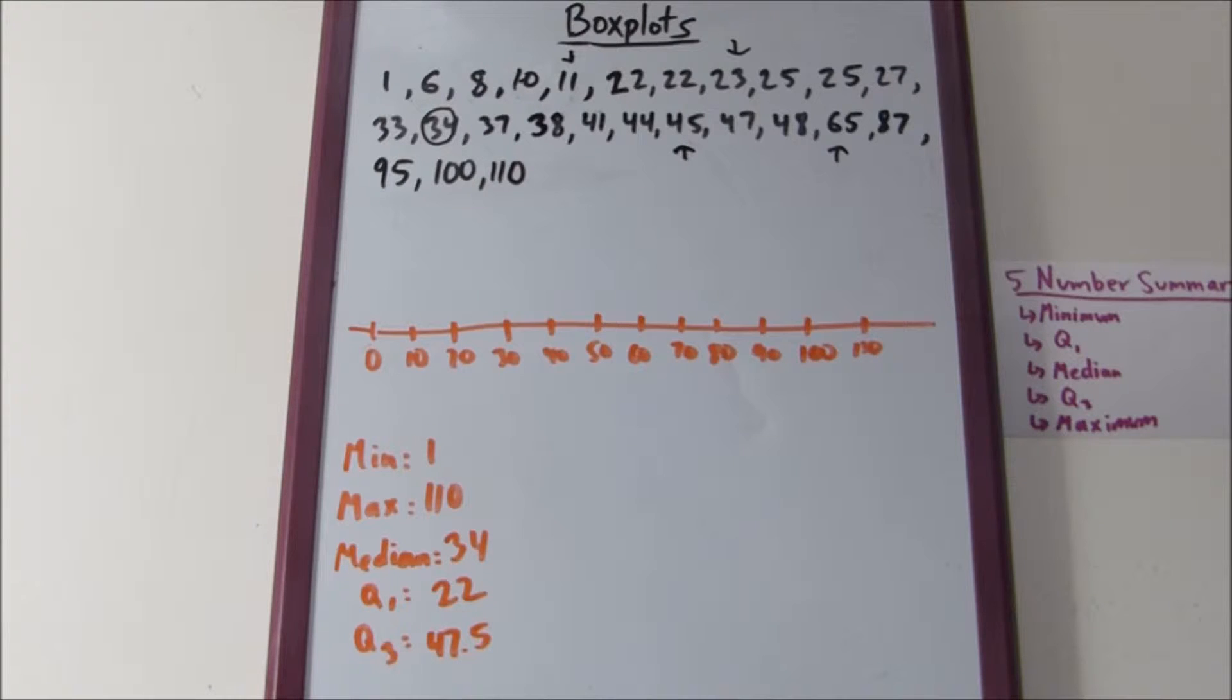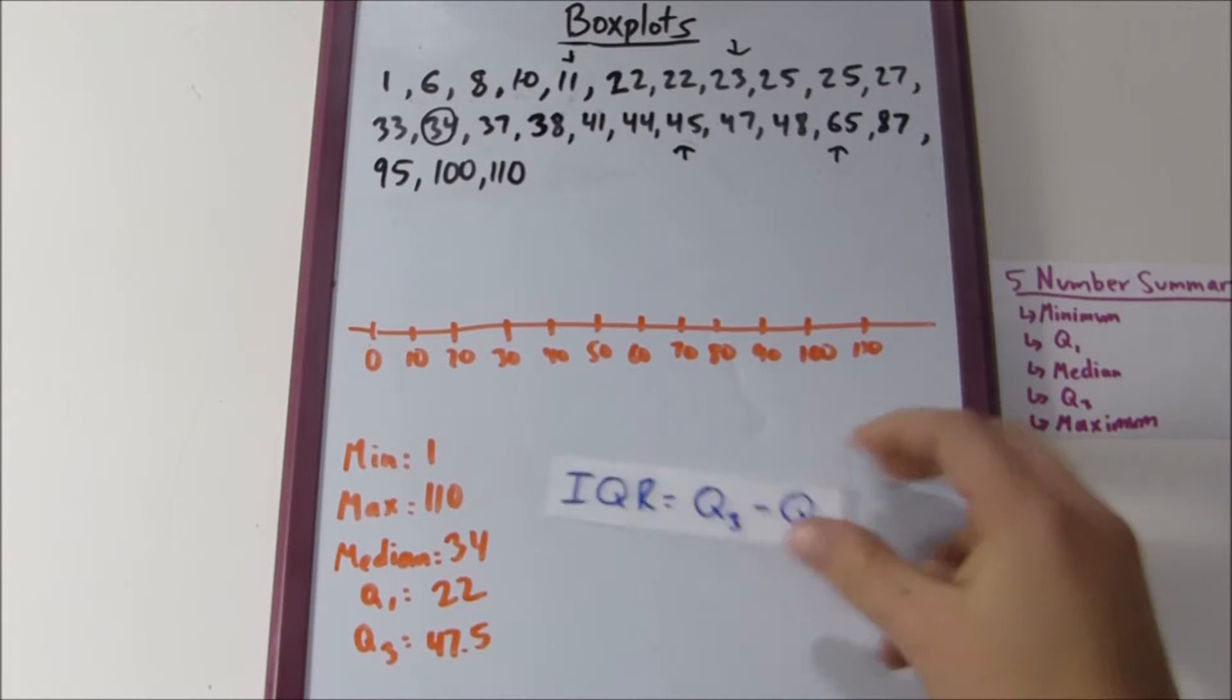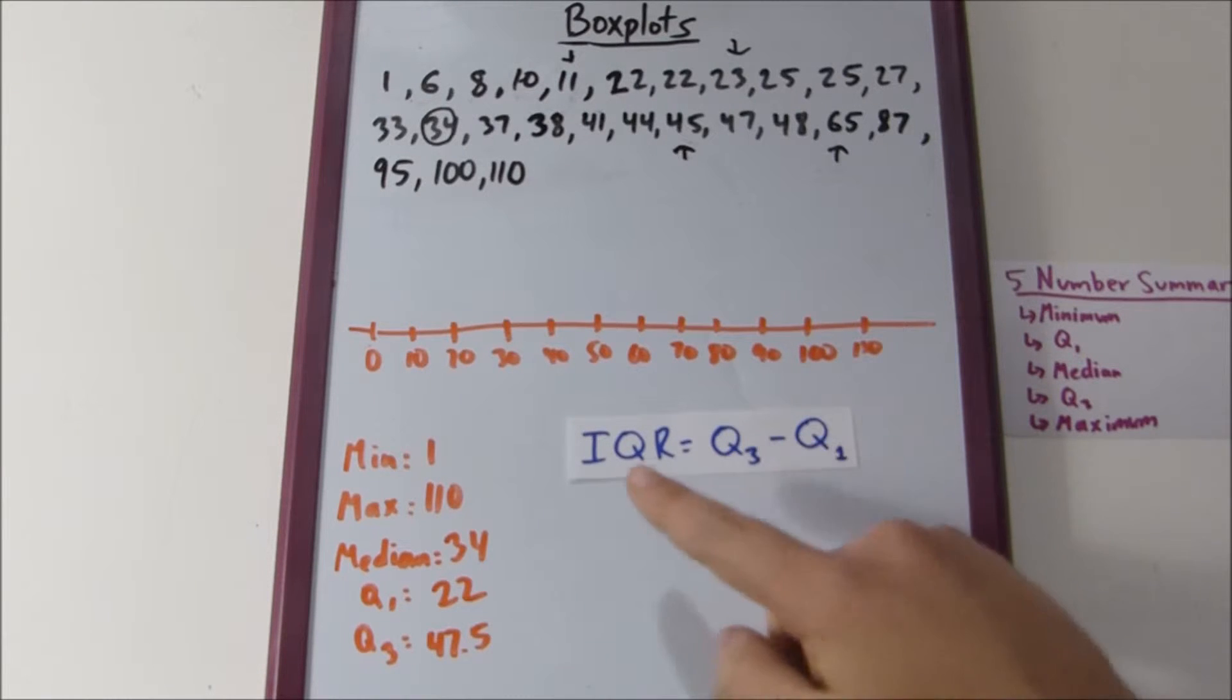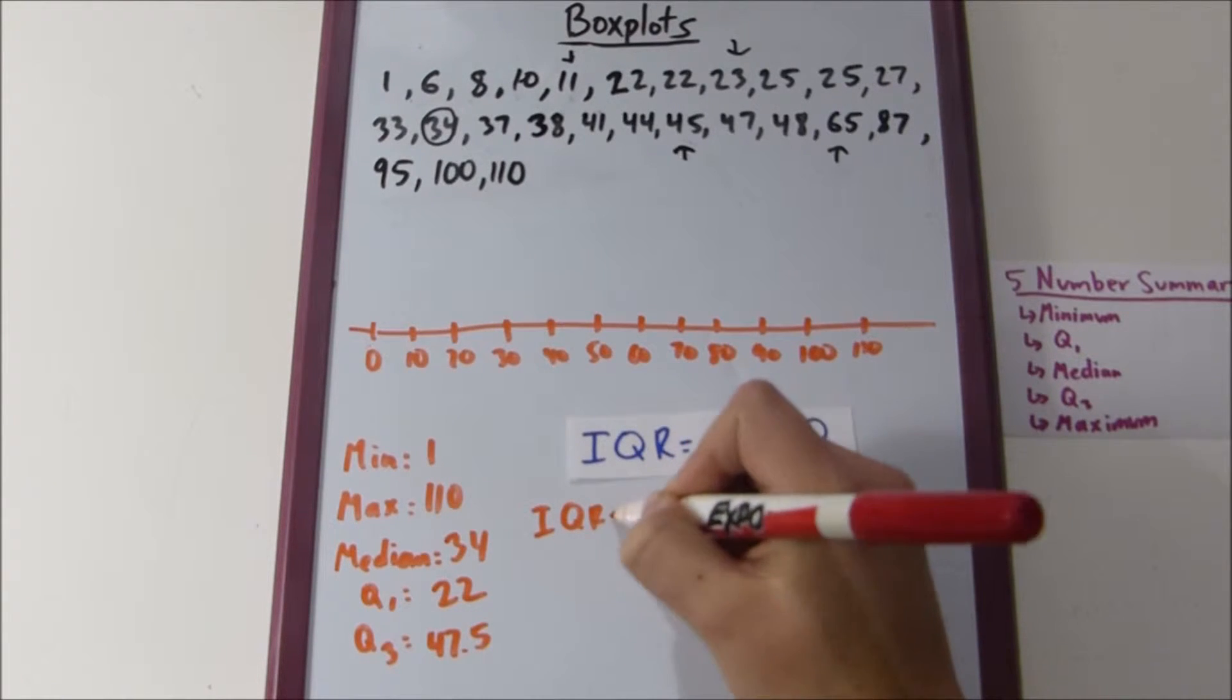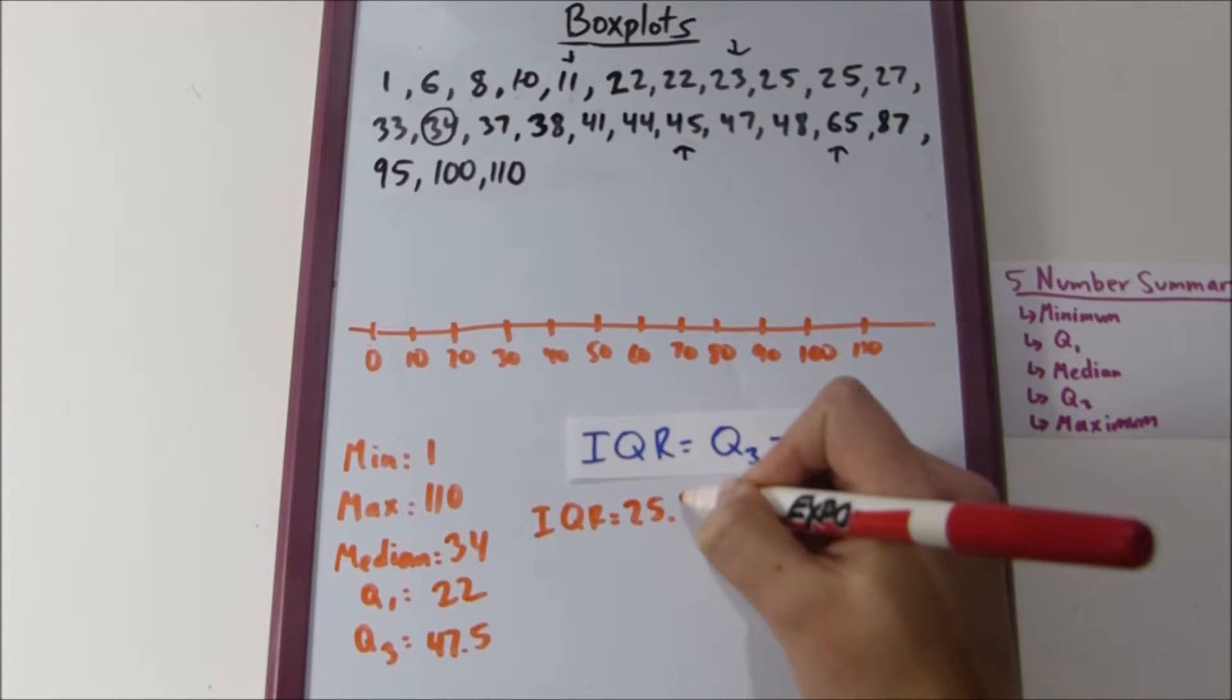We still can't plot anything, because like I said, we need to find our outliers. Our outliers depend on something called the inner quartile range, which is also known as the value you get when you subtract quartile one from quartile three. In our case, forty-seven and a half minus twenty-two is IQR is twenty-five point five.